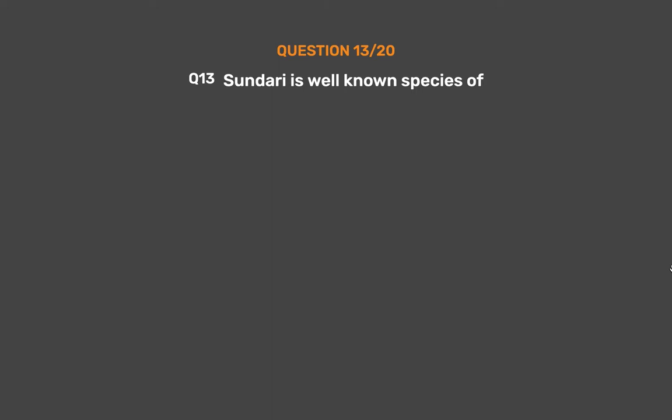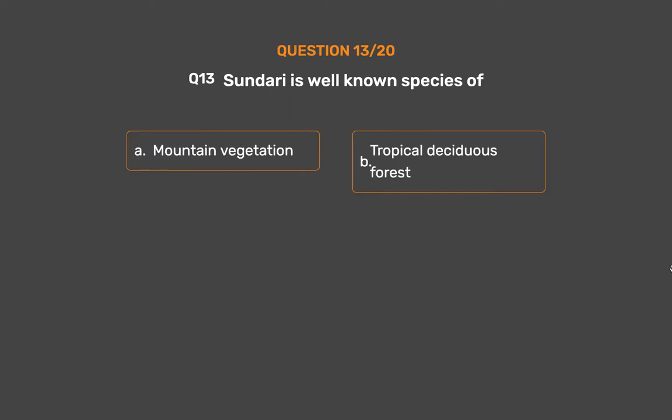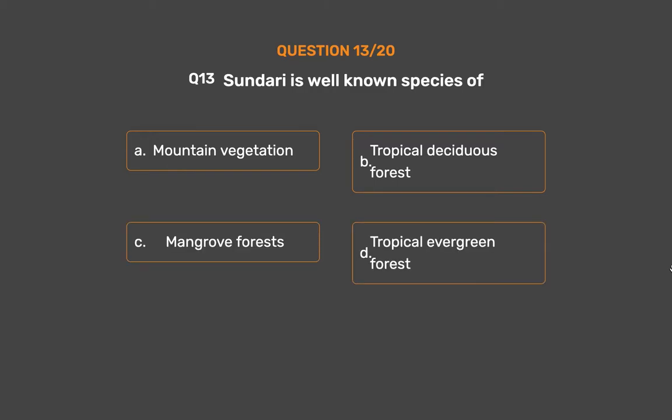Question No. 13: Sundari is a well-known species of — Option A: Mountain vegetation, Option B: Tropical deciduous forest, Option C: Mangrove forests, Option D: Tropical evergreen forest.